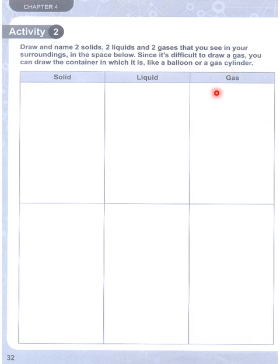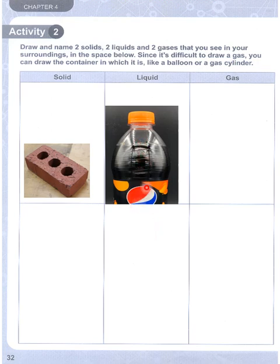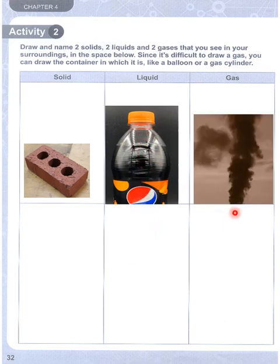You can draw a balloon or a gas cylinder for gas. A balloon filled with air is a gas. You can also draw a bottle containing gas. So these are examples of how to represent gas in your drawing.